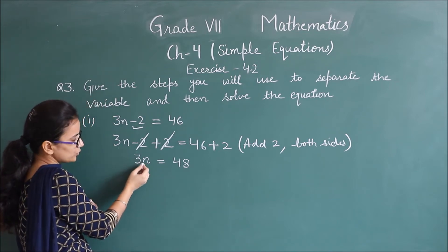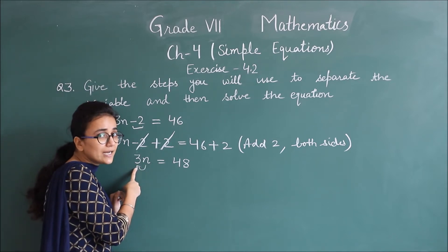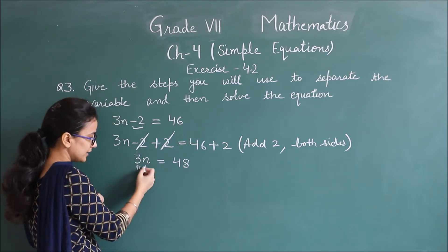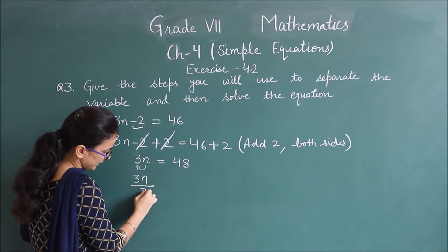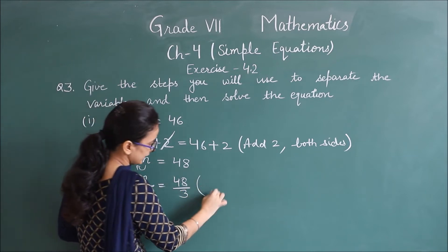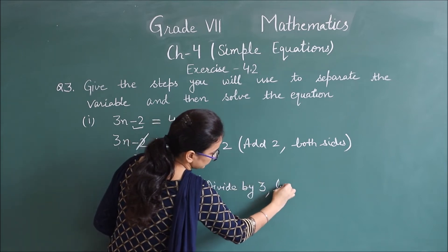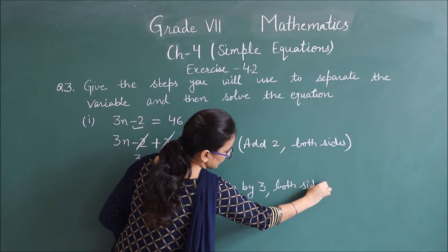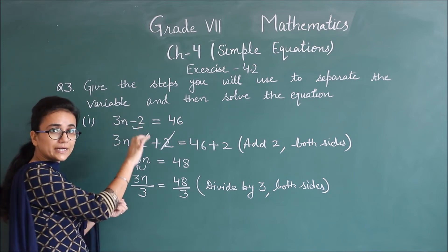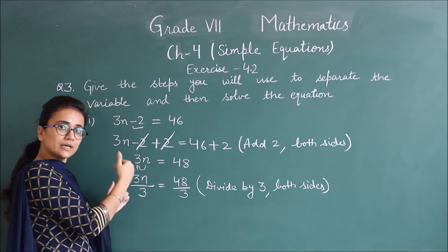Now next step, look, what comes? What do I need to do? The 3 that's with n, I need to remove it. 3 is multiplied. To remove it, what do we need to do? Divide by 3. The number which is multiplied, divide it. Next step: 3n divided by 3, 48 divided by 3. And in bracket what will we write? Divide by 3 both sides. Clear? One by one, each constant we are removing so that the variable separates. The numbers that are there, we need to remove them.